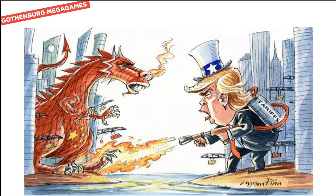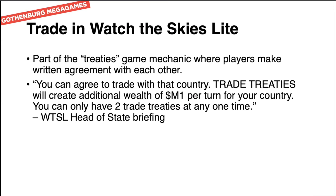So I started by looking at trading in Watch the Skies as it is described in the light version, which is the version that most people run — the sort of boxed version that is being sold on Rock Paper Scissors. Basically, this is the economy as described in the rules for that game. It's part of the treaty's game mechanic, where you can do a bunch of different types of treaties — defense treaties, science treaties, and so on. Part of that is that you can agree to trade with a country, and trade treaties will create additional wealth of one megabuck per turn for your country. You can have up to two treaties at any one time, and that's in the head of state briefing for Watch the Skies Light.